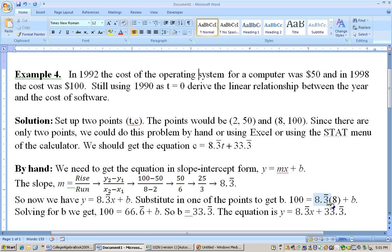So I just got to get what the b is, well, 8.3 bar times 8 is 66.6 bar, subtract off the 66.6 bar, and you get 33.3 bar, so the b is 33.3 bar. So that's your equation right there, y equals 8.3 bar x plus 33.3 repeating.